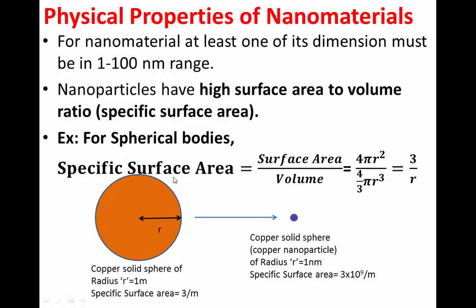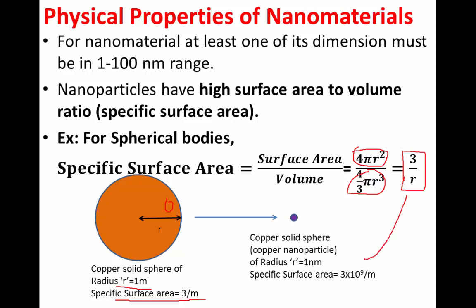For a spherical body, the specific surface area is equal to surface area divided by volume. The surface area is equal to 4πr² and its volume is equal to 4/3 πr³. Therefore, the specific surface area is 3/r. Now, if I take a solid copper sphere of radius around 1 meter, the specific surface area is around 3 per meter. But if I take a very small part of this with a radius of 1 nanometer — that is a copper nanoparticle of radius 1 nanometer — I will get the specific surface area as 3×10⁹ per meter. That is how for nanomaterials, specific surface area is very high.